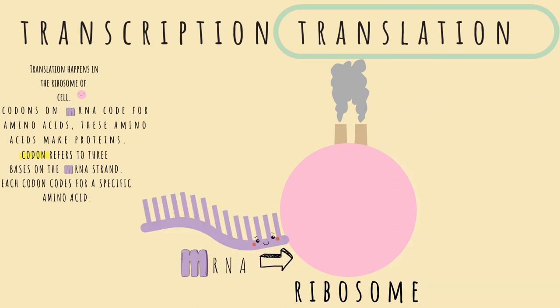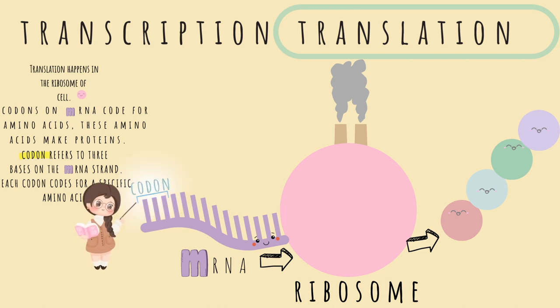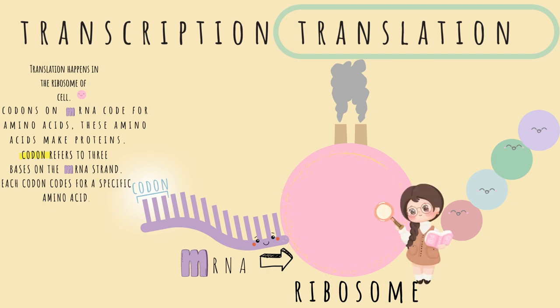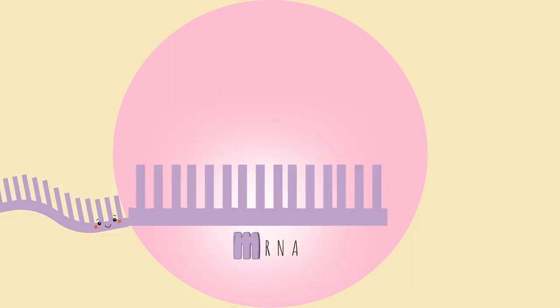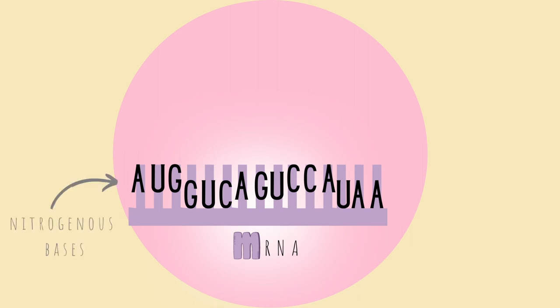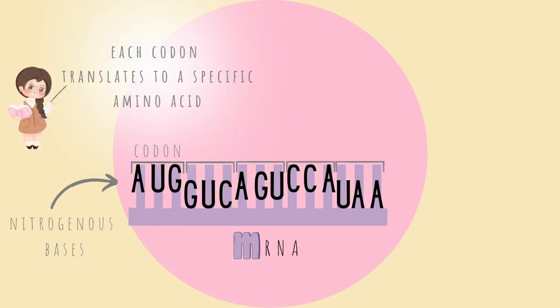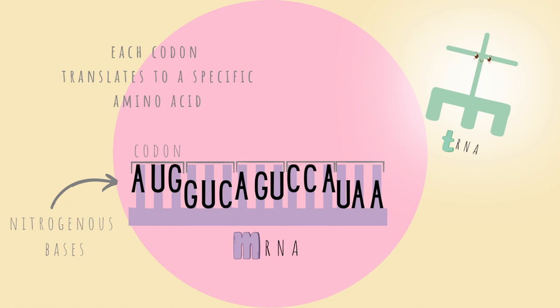mRNA starts the translation process by entering the ribosome at one end, and out of the other end comes the finished product — the amino acids. Looking at our mRNA, we can clearly see the codons, which have a big role as we take a magnified look at what happens within the ribosome. Here inside the ribosome, mRNA has nitrogenous bases organized into codons — every three bases equal one codon, and each codon translates to a specific amino acid. This process is all possible because of tRNA, the transfer RNA.